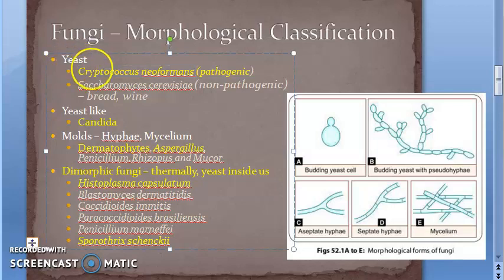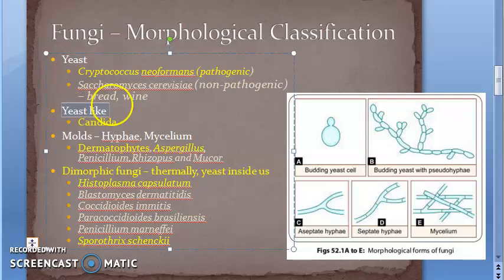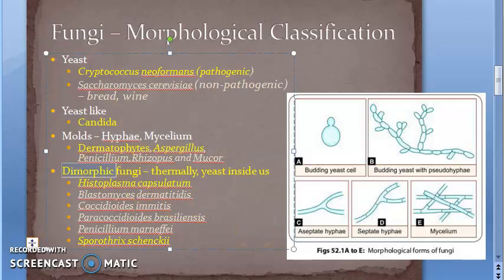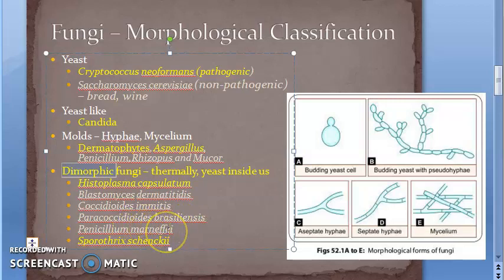To recap the examples: Yeast - Cryptococcus neoformans (pathogenic), Saccharomyces cerevisiae (non-pathogenic, bread/wine). Yeast-like - Candida. Molds - hyphae/mycelium forming, examples: dermatophytes, Aspergillus, Penicillium, Rhizopus, Mucor. Dimorphic fungi (thermally, yeast inside us): Histoplasma capsulatum, Blastomyces dermatitidis, Coccidioides immitis, Paracoccidioides brasiliensis, Penicillium marneffei, Sporothrix schenckii.